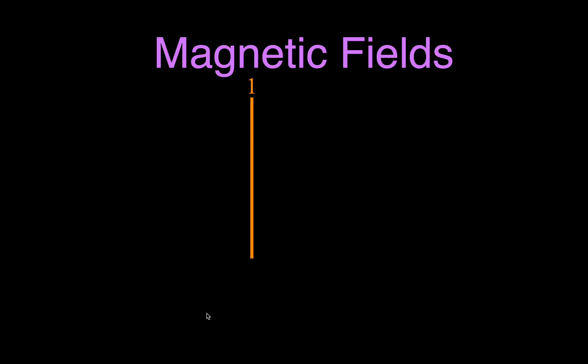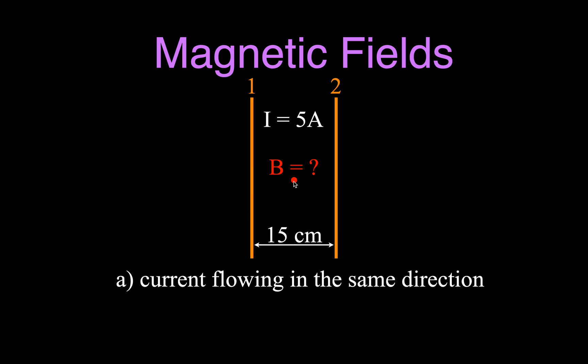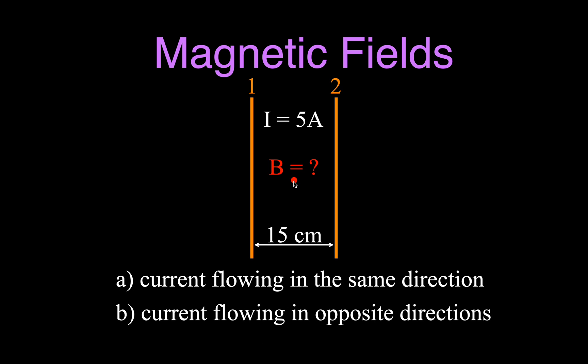I've made some other videos for magnetic fields and current-carrying wires — you can link to those in the upper right-hand corner. For this example, we are going to say that we have one wire with a current flowing through it and another wire with a current flowing through it. Those two wires are separated by 15 centimeters, and they both have a current of 5 amperes. We want to know the magnetic field strength, magnitude, and direction at the point right in the middle between those two wires. We're going to do this for two different cases: one where the current flows in the same direction through each wire, and one where the current flows in opposite directions.